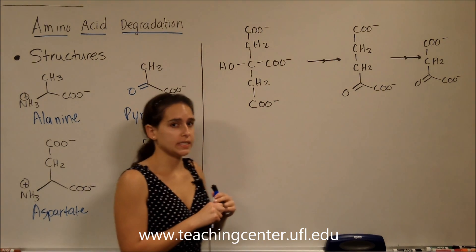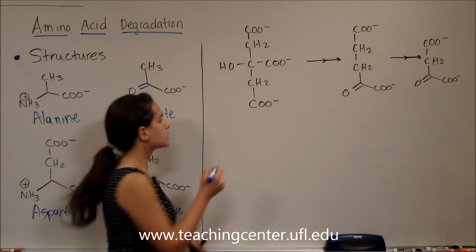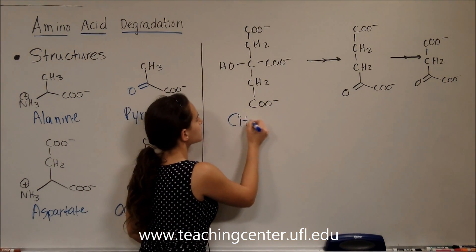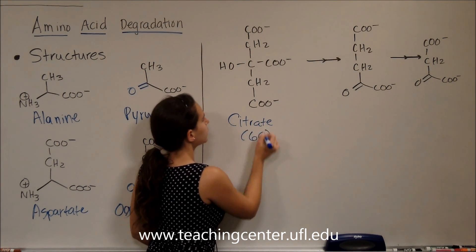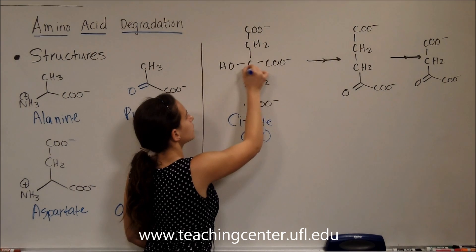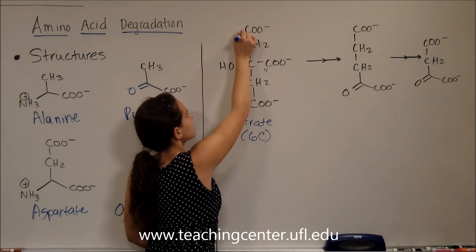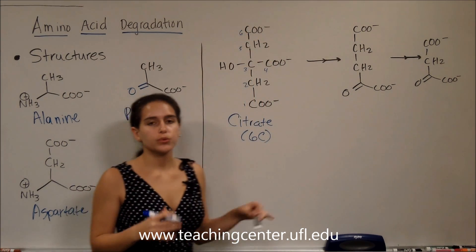So if you recall from the TCA cycle, this is a structure of citrate, which has six carbons, right? One, two, three, four, five, and six.